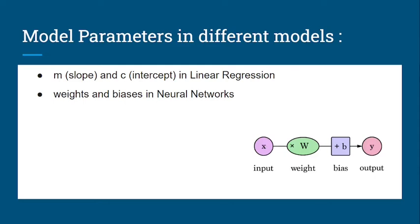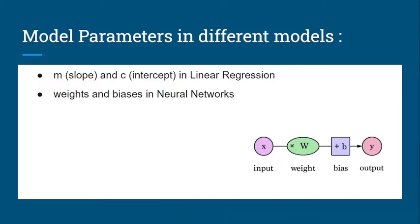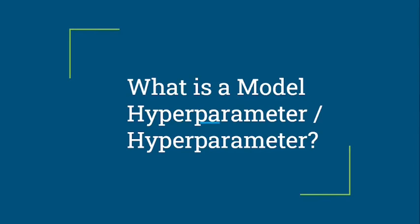Looking at model parameters in different models: m (slope) and c (intercept) are used in linear regression. In neural networks, the weights and biases are the model parameters, which are learned on each epoch.